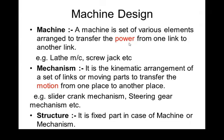In a lathe machine, a lead screw provides power; a motor rotates the chuck, and manual or automatic feed carries out the operation. Power is transferred from one element to another — that is called a machine. The second category is the mechanism, which is a kinematic arrangement of a set of links or moving parts.